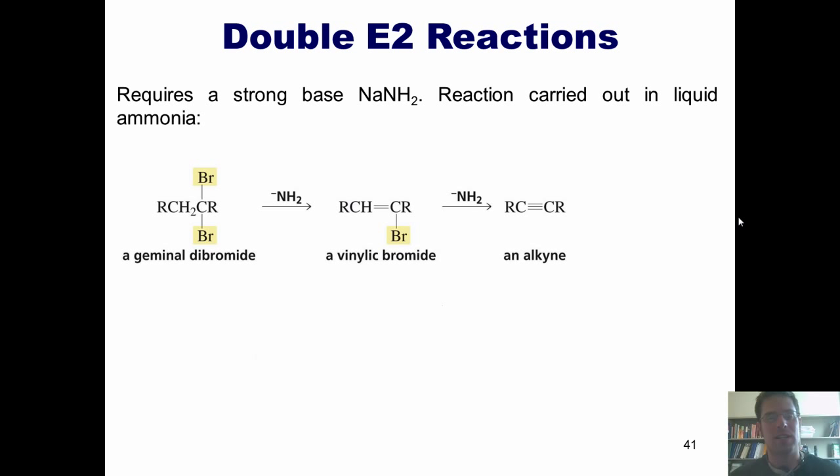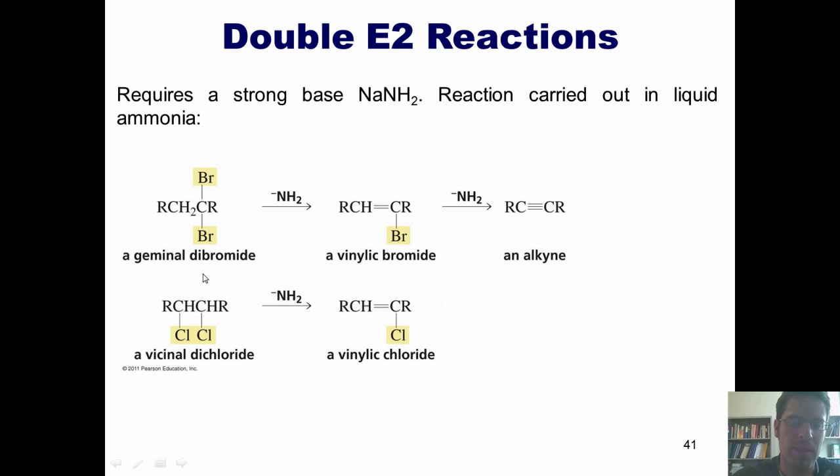Now in contrast, I can do the same thing with a molecule that has two leaving groups on carbons next door to each other. This is a vicinal dichloride. Using the exact same conditions, the first molecule of NH2- will grab a hydrogen here, pump the electrons down, and kick off a chloride leaving group to give me this intermediate. And then the second molecule will do the same thing just on the carbon to the left, giving me my final product alkyne.